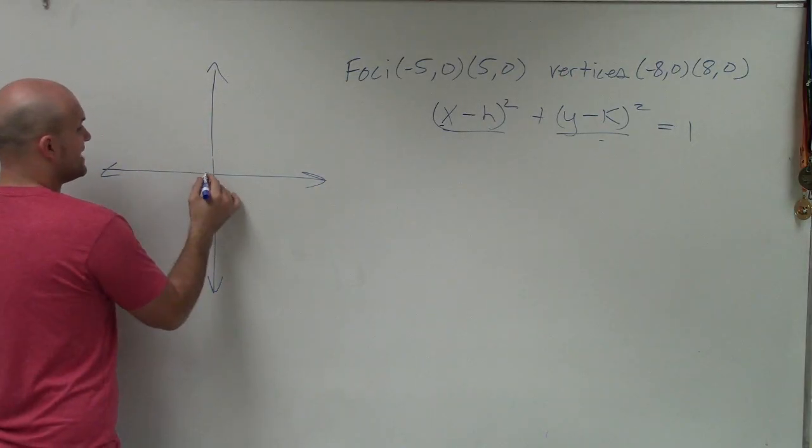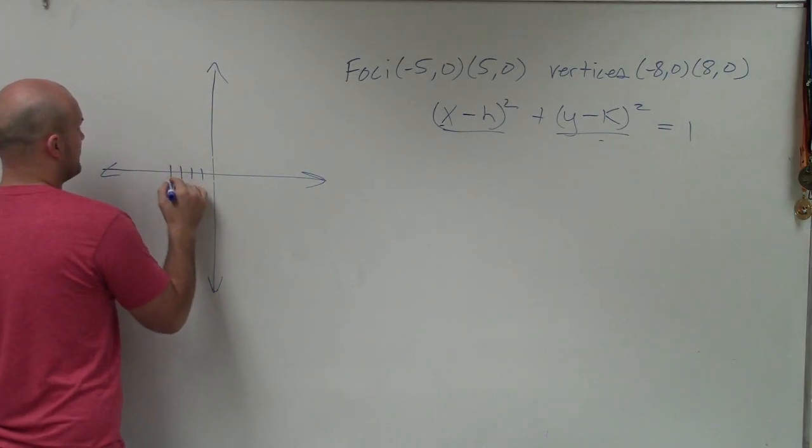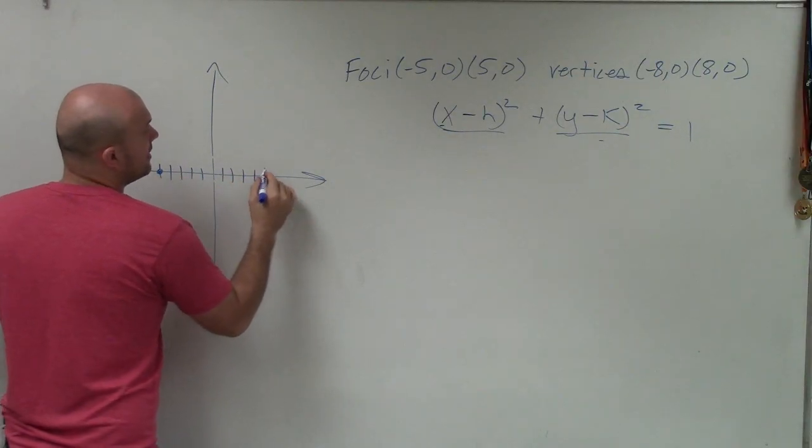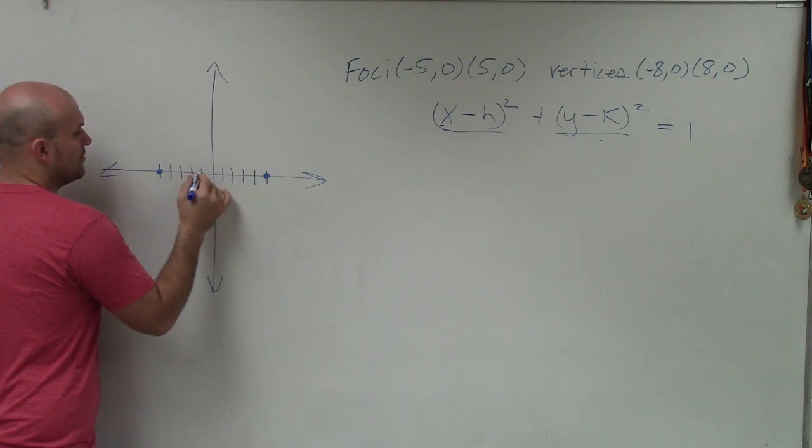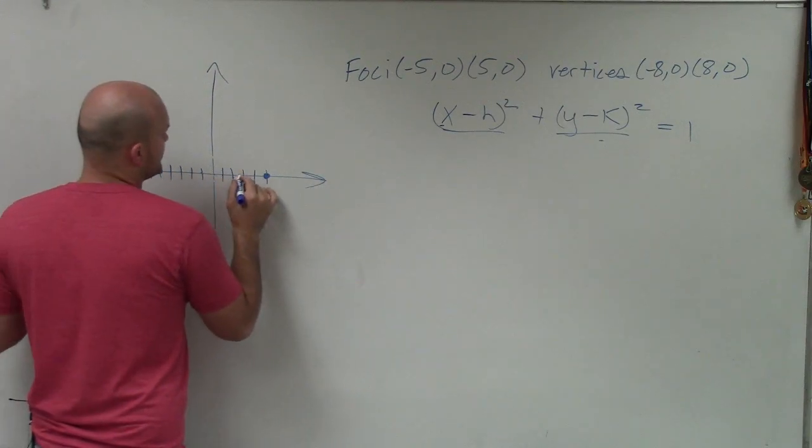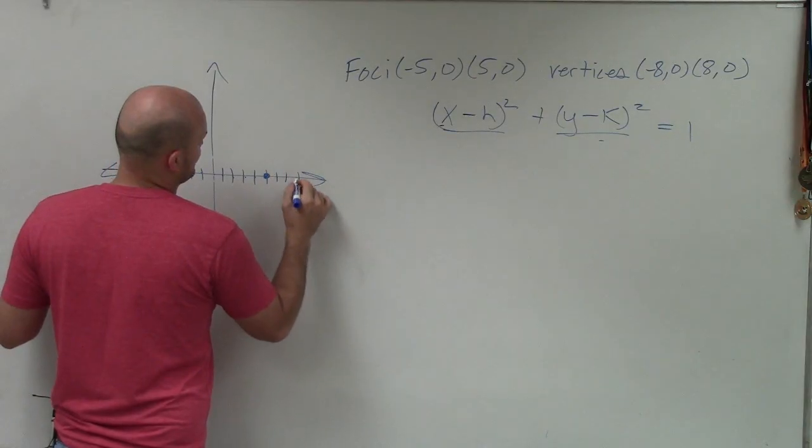So they say the foci is (-5, 0). 1, 2, 3, 4, 5. And (5, 0). 1, 2, 3, 4, 5. And the vertices are (-8, 0). 1, 2, 3, 4, 5, 6, 7, 8. And (8, 0). 1, 2, 3, 4, 5, 6, 7, 8.